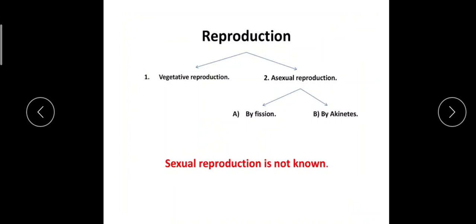Here you can see a flow chart. Reproduction can be of vegetative or asexual methods. Asexual methods can be by fission or by akinete formation, and sexual reproduction is completely absent.